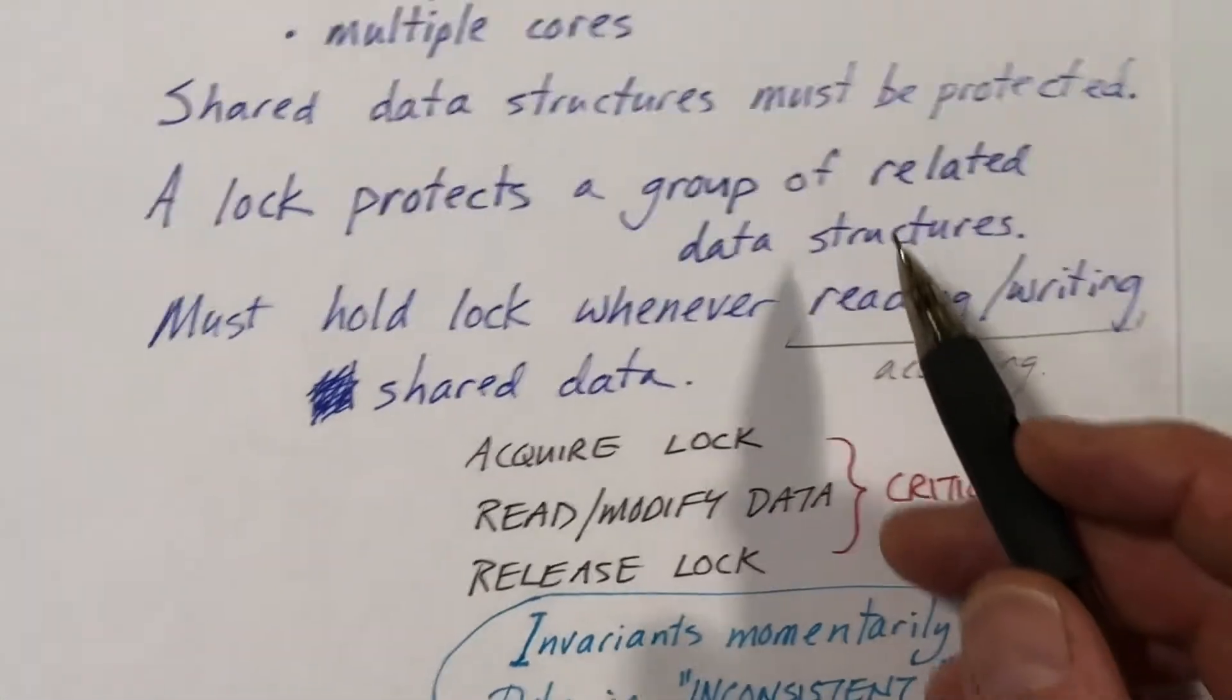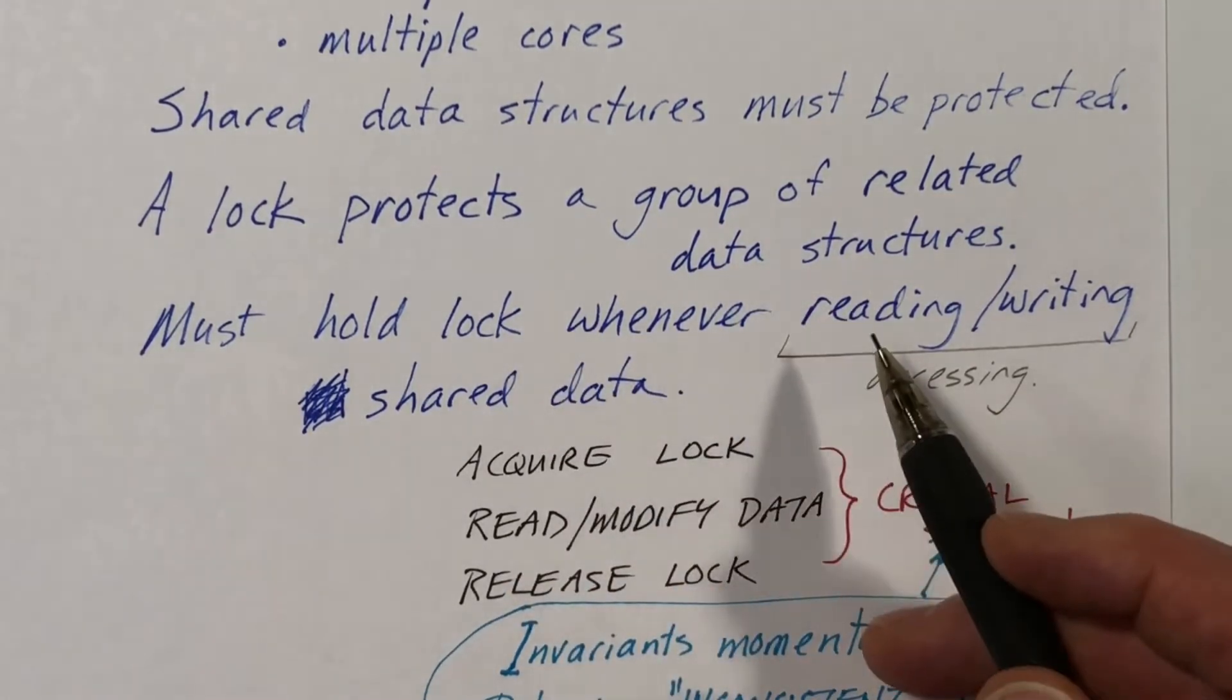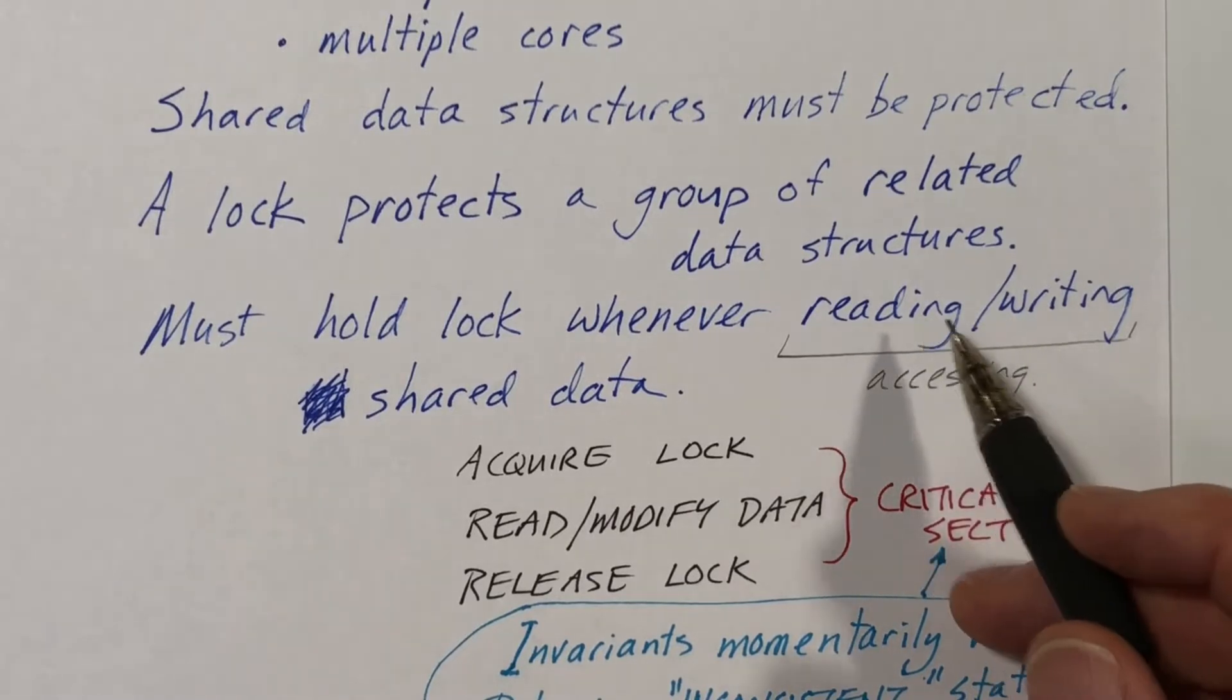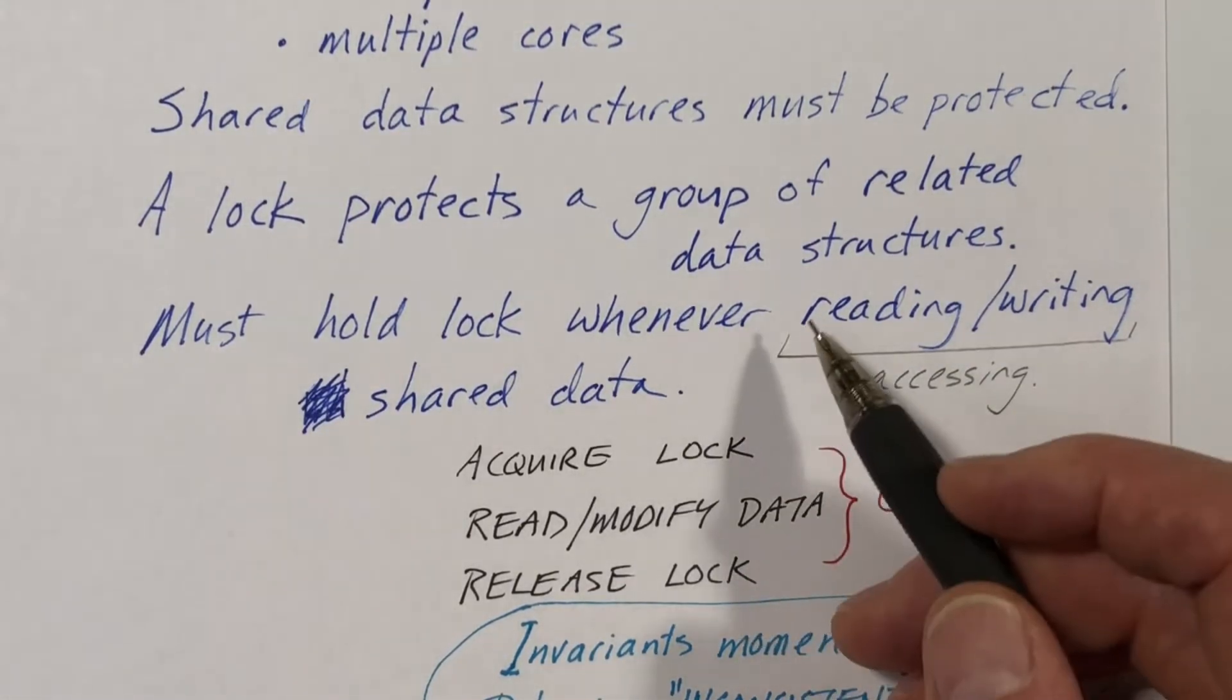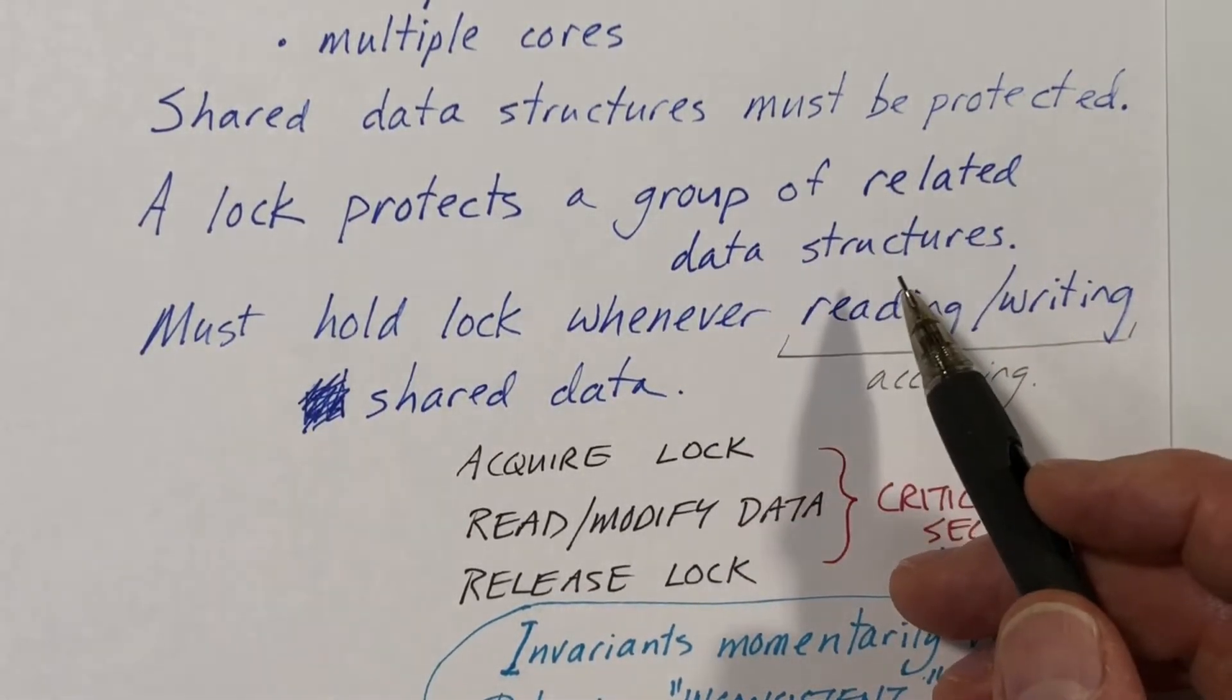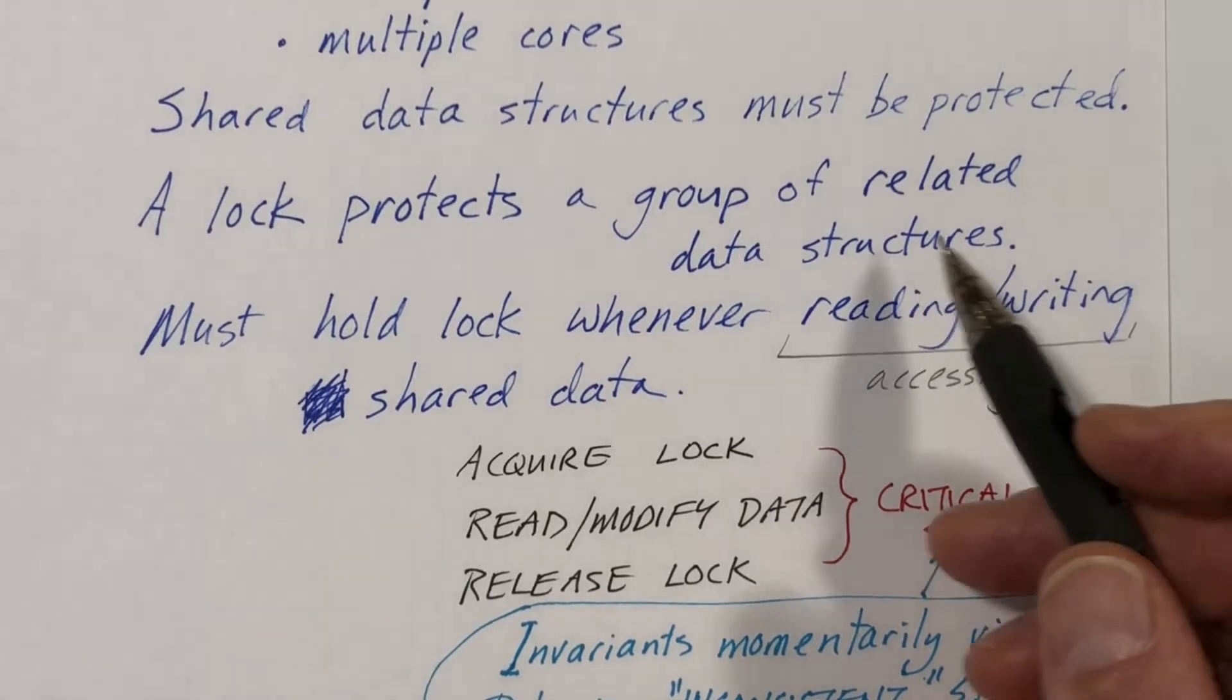And whenever we access the shared data, we need to acquire the lock and hold it while we are either reading or writing the data. We can say that whenever we access the data, and by accessing we mean either reading or writing, we must be holding the lock. So every bit of the shared data must be protected by a lock, and whenever we access anything that is shared, we need to be holding the lock.